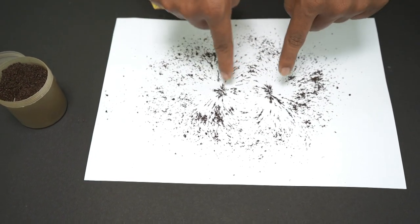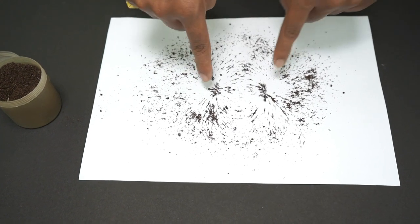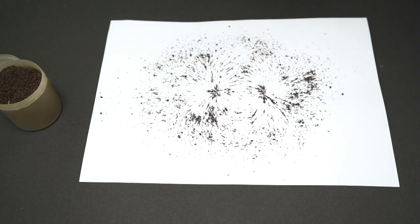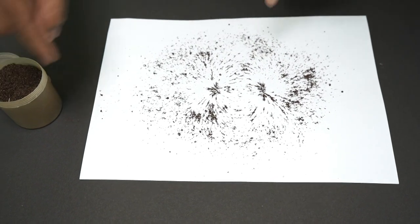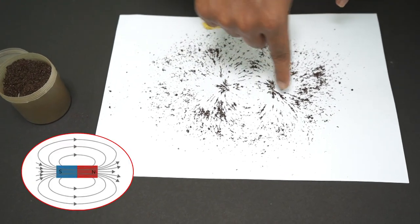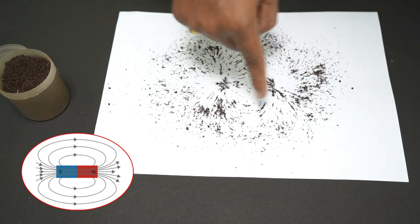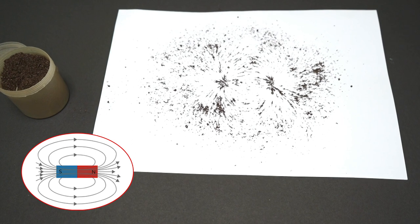You see these lines here? So these are the two points where maximum iron filings are attracted. So these are the north and the south poles. And this pattern here, can you see? This is the magnetic field lines. They will show the direction of the magnetic field.